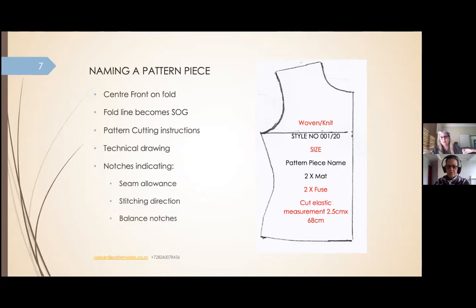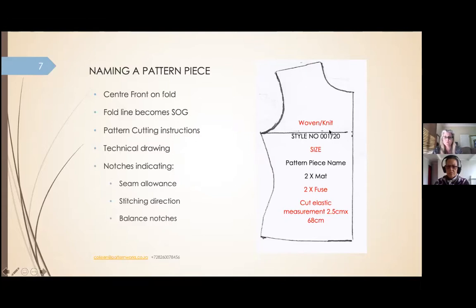When you receive a pattern, anything that is on the fold should be on the fold, because factories don't lay fabric folded — they lay fabric open. So all patterns must be open, and your fold line will become your straight of grain. Your SOG is along the straight of grain.